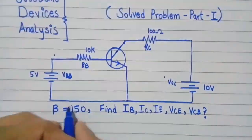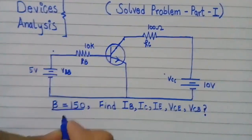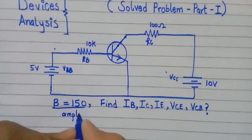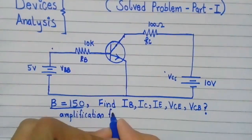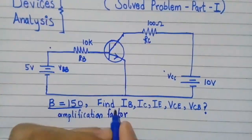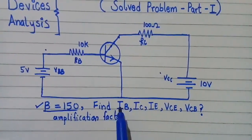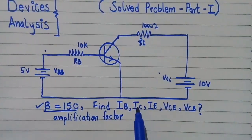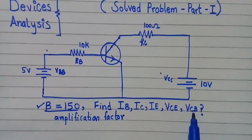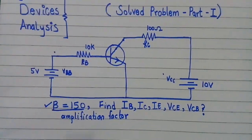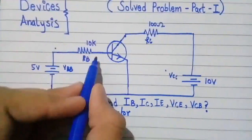Here, beta of the transistor is given. Beta is the amplification factor. We will have to find the base current, the collector current, the emitter current, the collector-emitter voltage, and similarly the collector-base voltage.